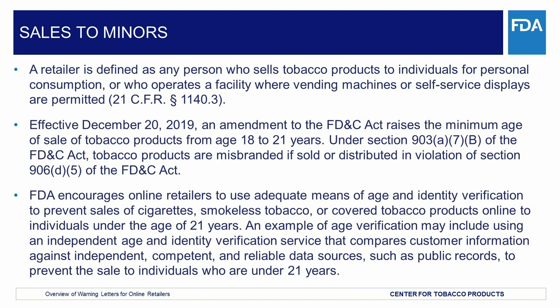To better ensure compliance with this requirement, FDA encourages online retailers to use adequate means of age and identity verification to prevent sales of cigarettes, smokeless tobacco, or covered tobacco products online to individuals under the age of 21 years. An example of age verification may include using an independent age and identity verification service that compares customer information against independent, competent, and reliable data sources, such as public records, to prevent the sale to individuals who are under 21 years.